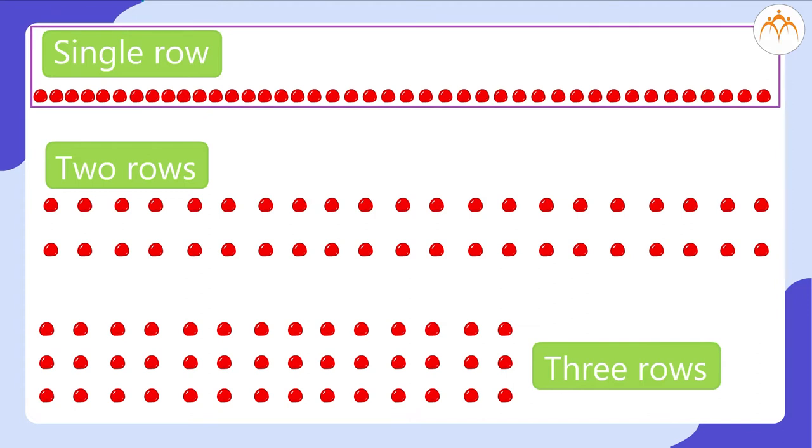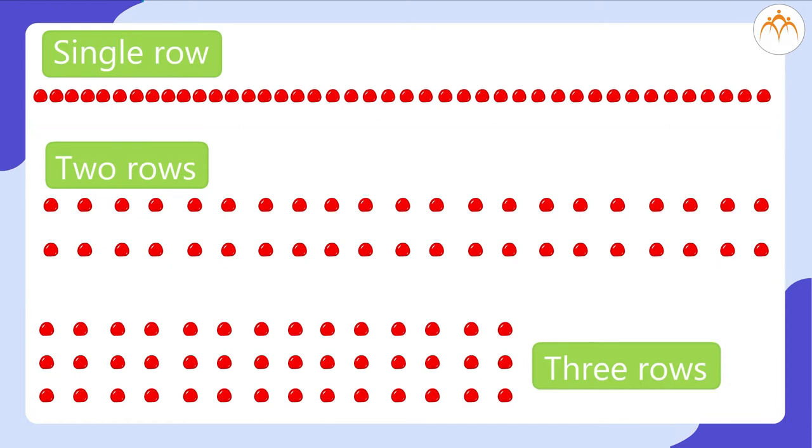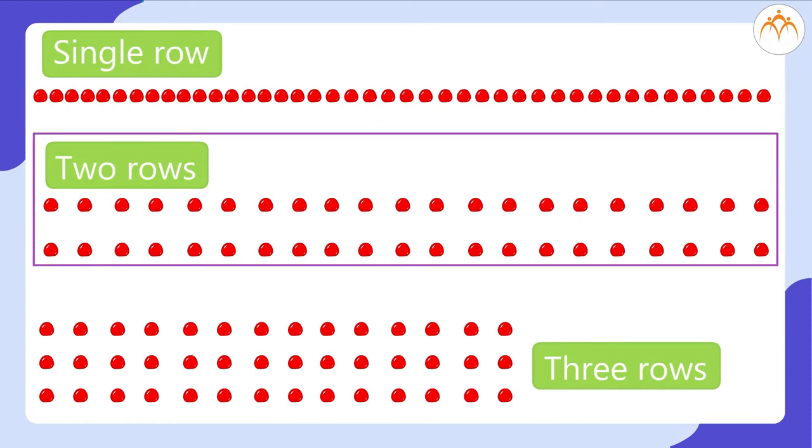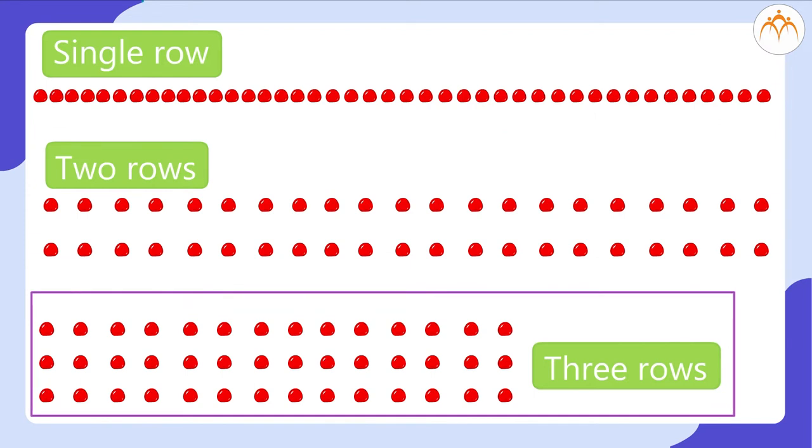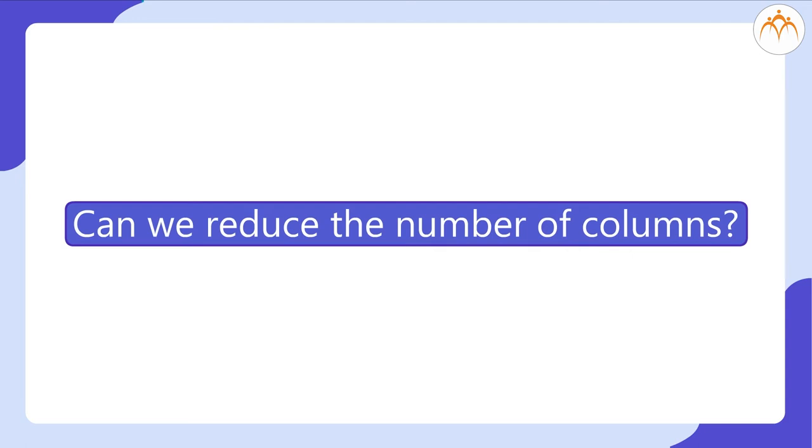In single row, it is too long. Also, with 2 rows, you have 21 in each row. Again, too long to be arranged on a cake. Let us consider arrangement of 42 cherries in 3 rows. There are 14 columns containing 3 cherries each. Can we reduce the number of columns?